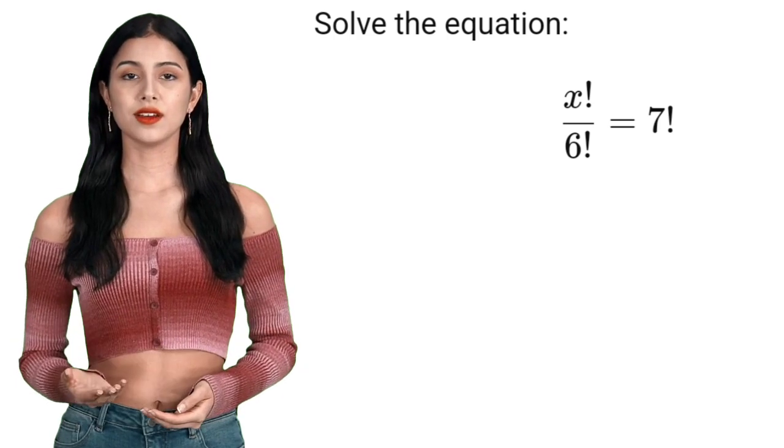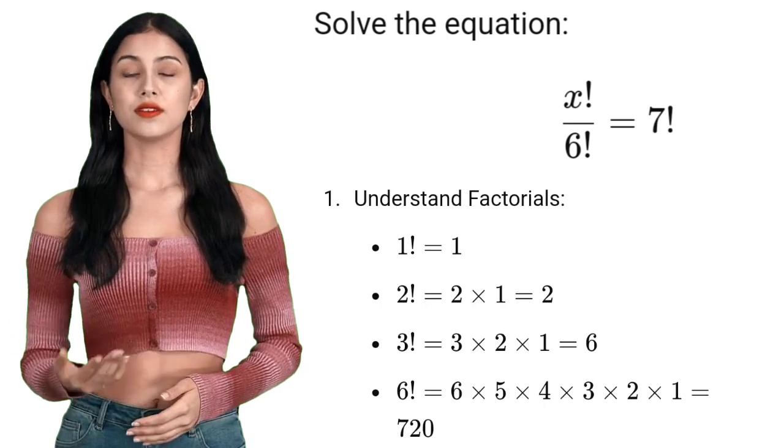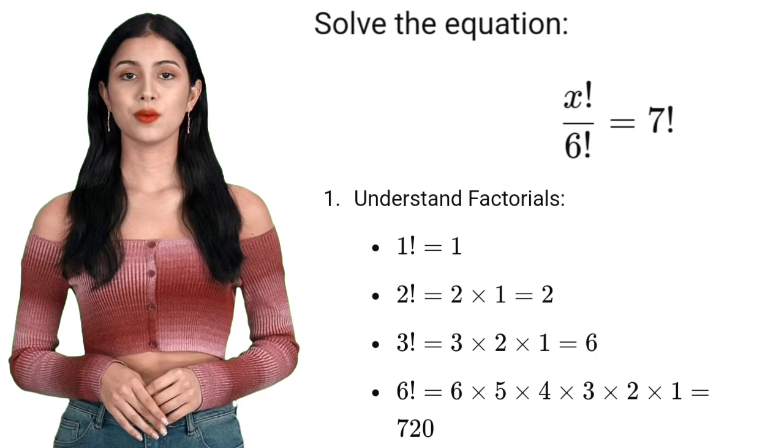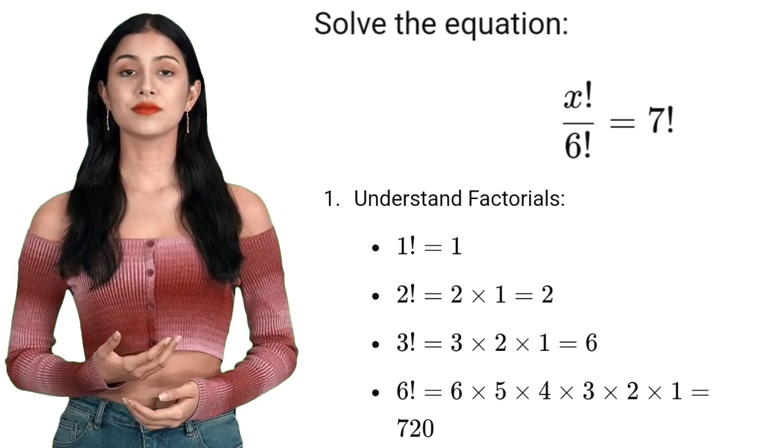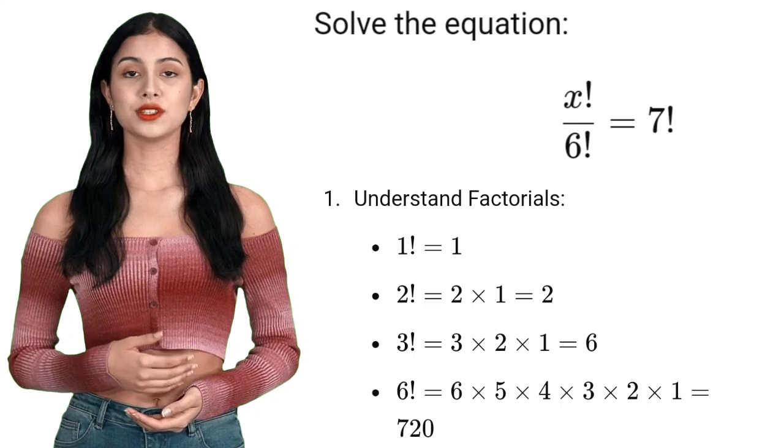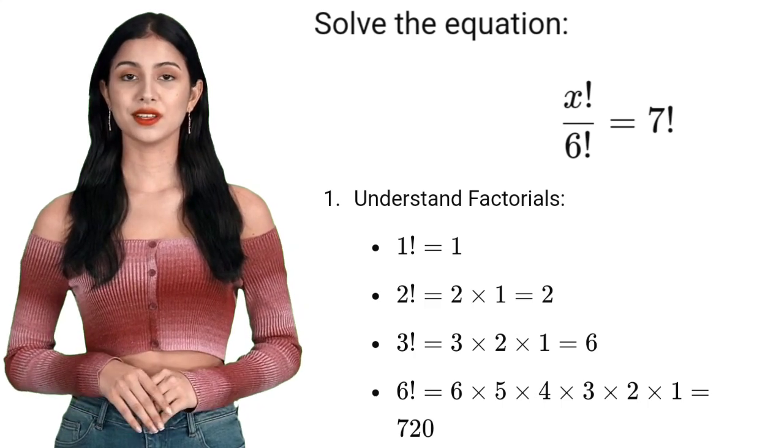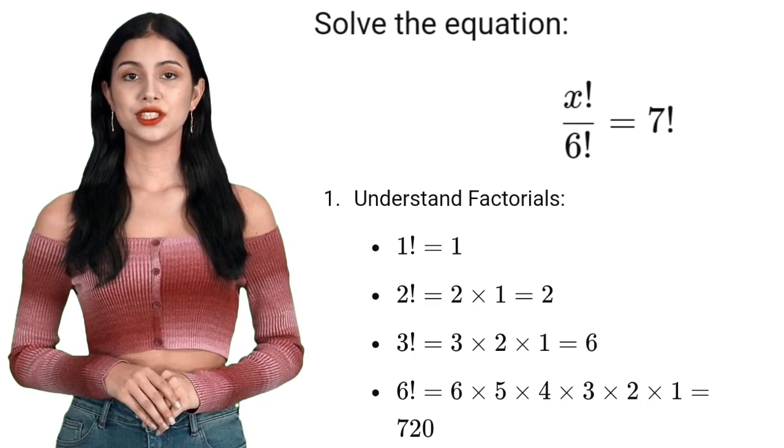To begin, let's break it down and simplify. First, recall what factorials are. 1 factorial equals 1. 2 factorial equals 2 times 1, or 2. 3 factorial equals 3 times 2 times 1, which equals 6.